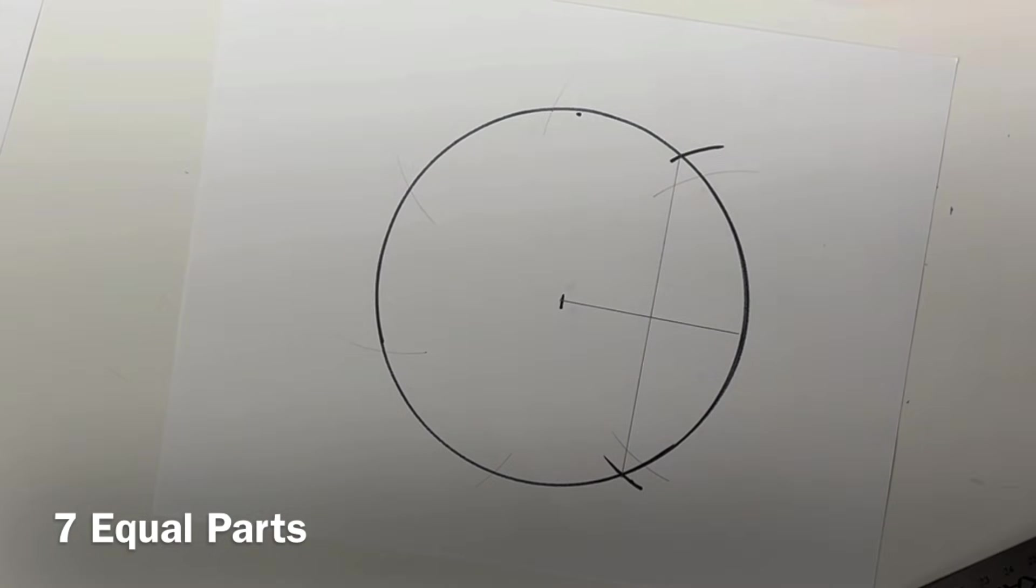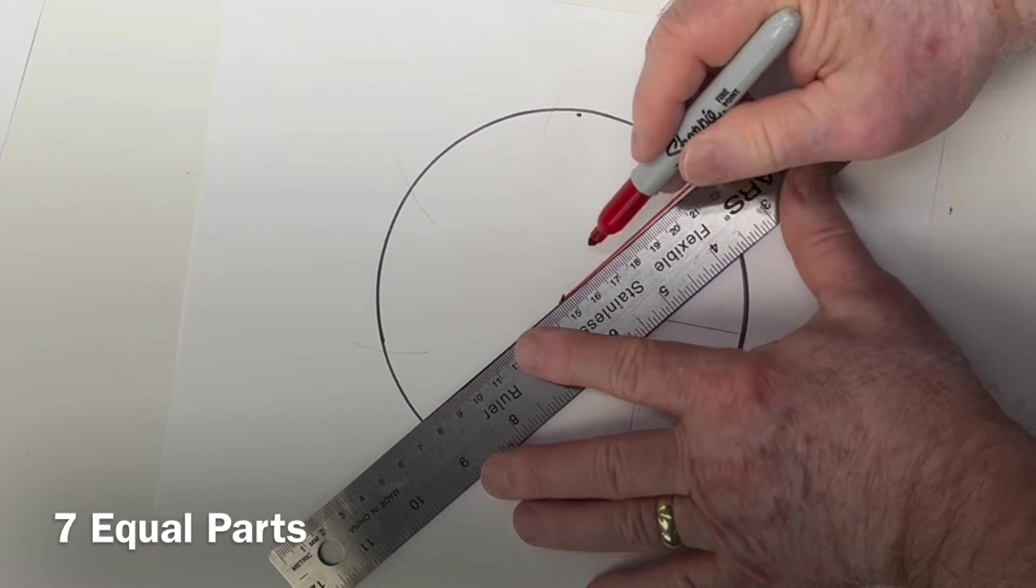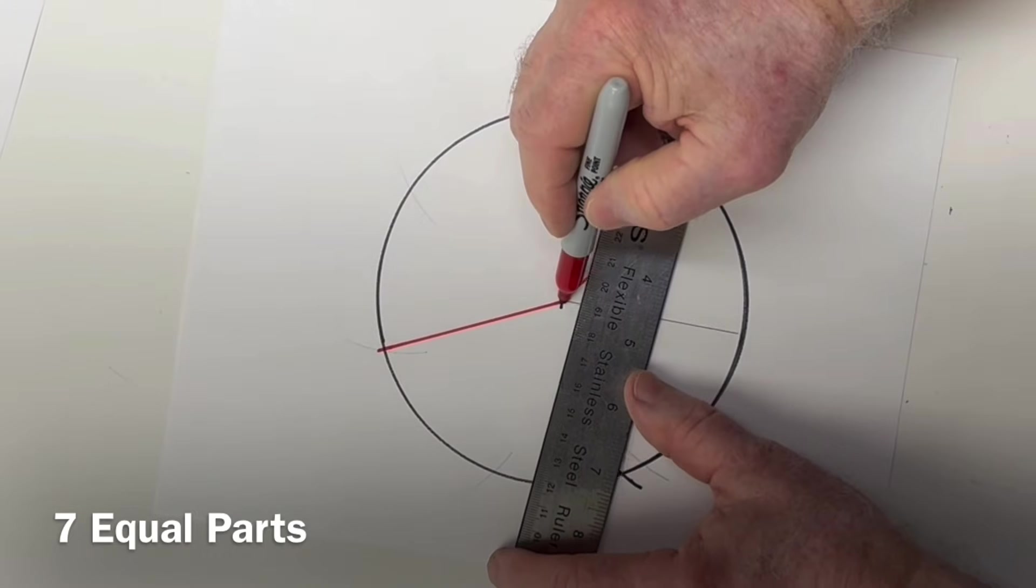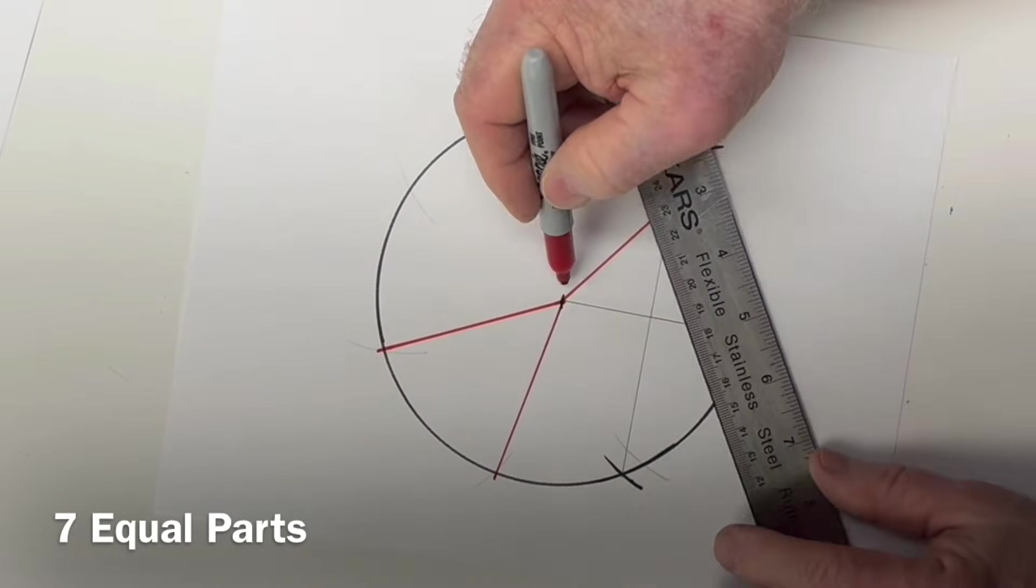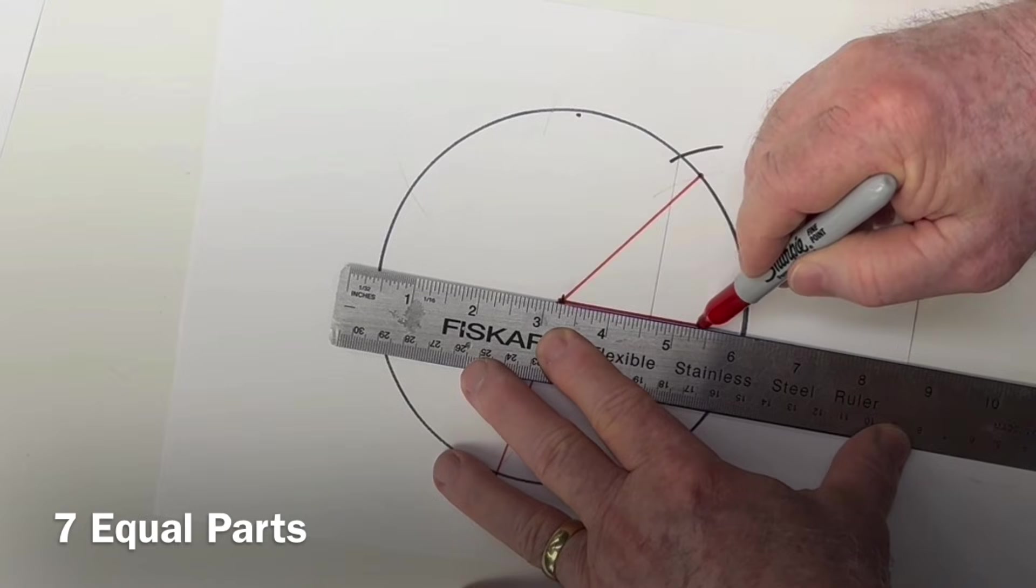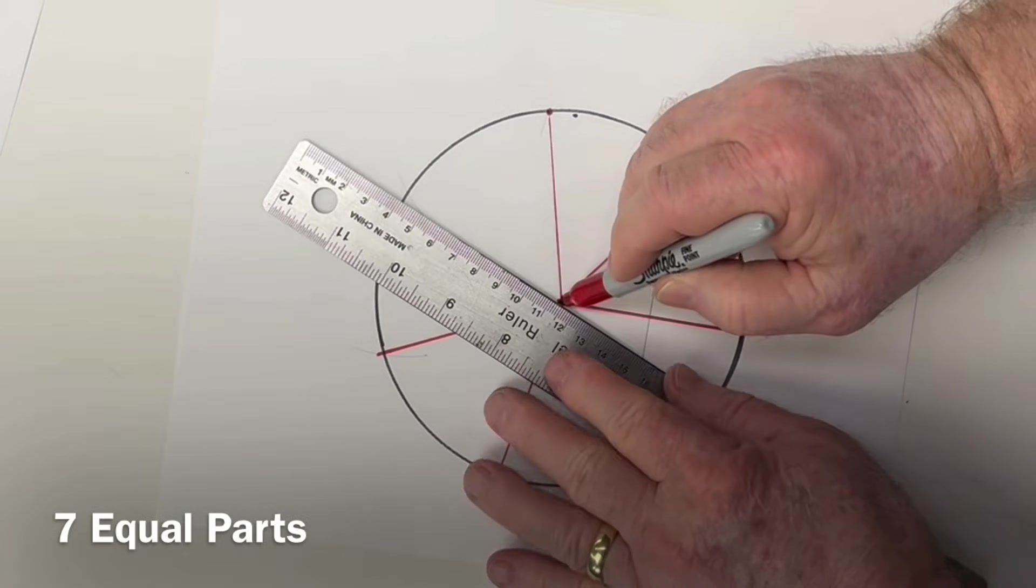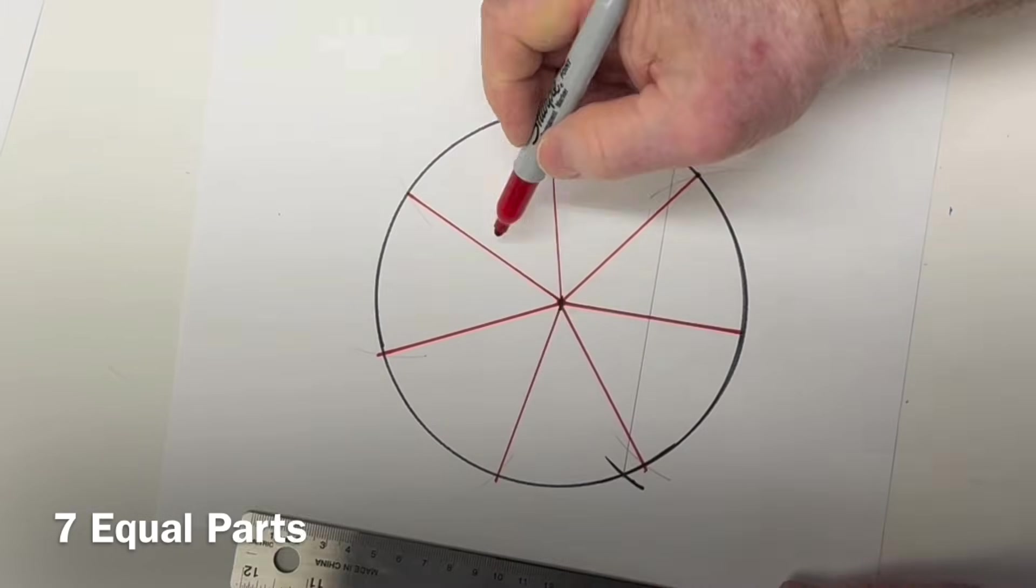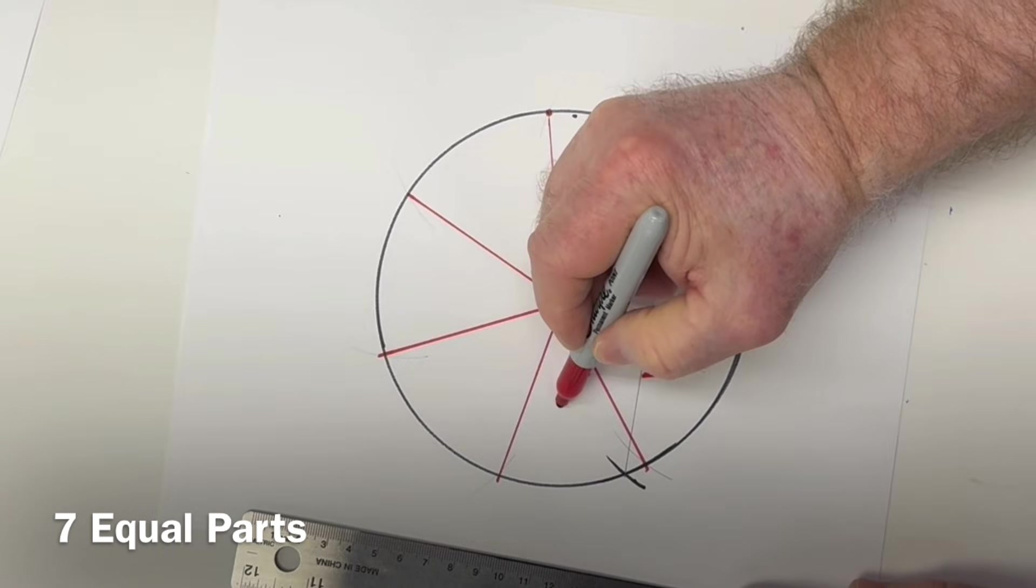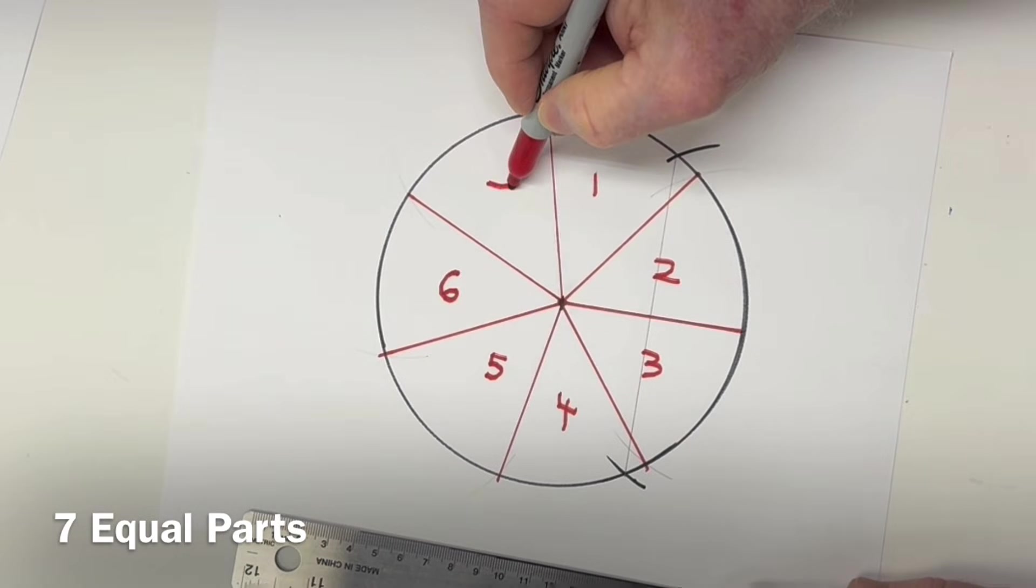So, to connect the lines, we'll use a red marker this time. And we'll go from here to there, up to there. Okay. So, that's one, two, three, four, five, six, and seven.